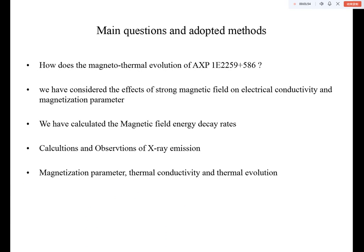How does the magneto-thermal evolution of anomalous X-ray pulsar 1E 2259+586 work? First, we have considered the effects of strong magnetic field on electric conductivity and magnetization parameters.